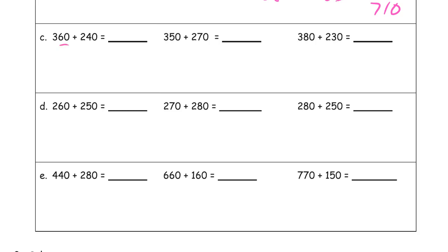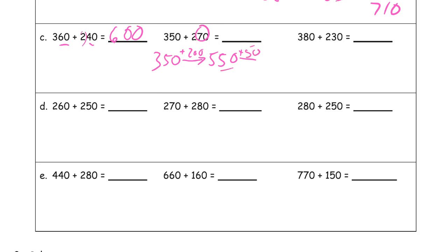360 plus 240: you might see that 60 and 40 is 100, then we have 200 more making 300, and then 300 more for 600. For 350 plus 270: start with 350 and mentally add the 200 first for 550. Then of the 70 we're adding, add 50 first to make the next 100 — that's 600. Then add 20 more for 620.